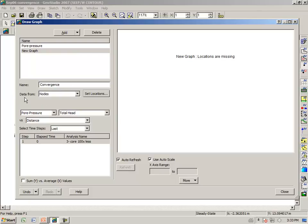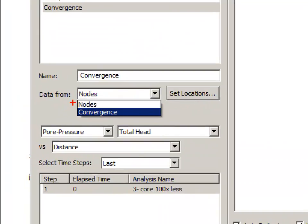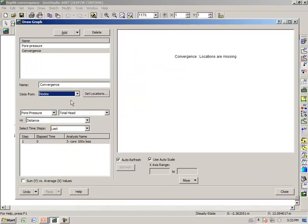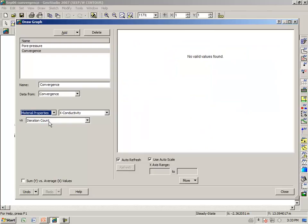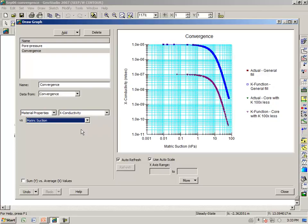This time, data is from convergence. Notice that we have to select convergence here. And we want to plot K versus suction. We need material properties. And we want to select versus matrix suction. K conductivity versus matrix suction.